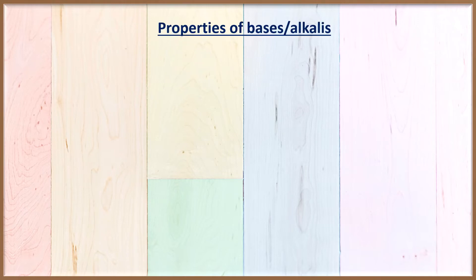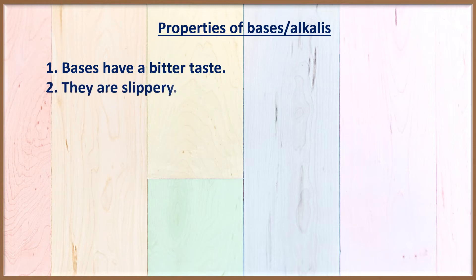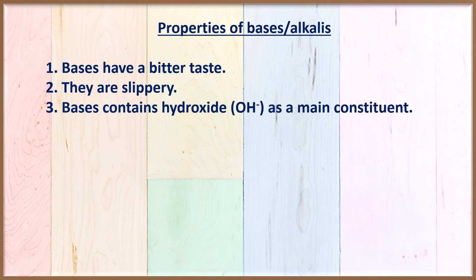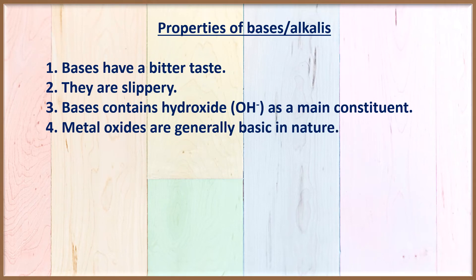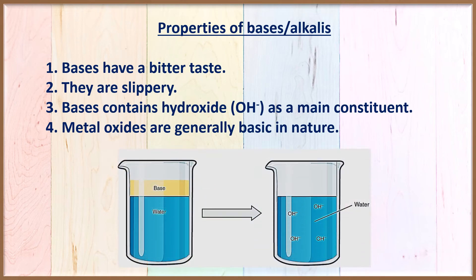The properties of bases or alkalis: First of all, they have a bitter taste, as compared to acids that have a sour taste. Bases are slippery to touch. They contain hydroxide or OH- as a main constituent. Metal oxides — when a metal mixes with oxygen they form metal oxides — are generally basic in nature. As you can see, a base in water gives you OH- ions.